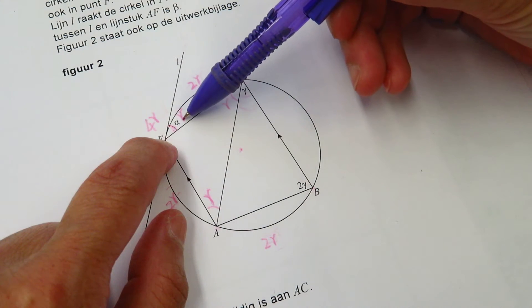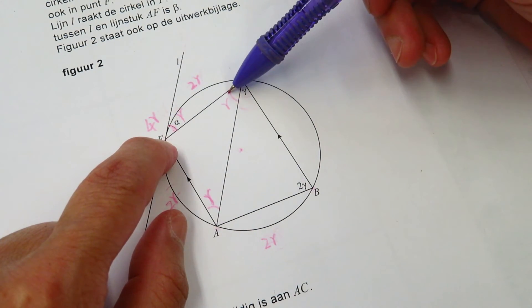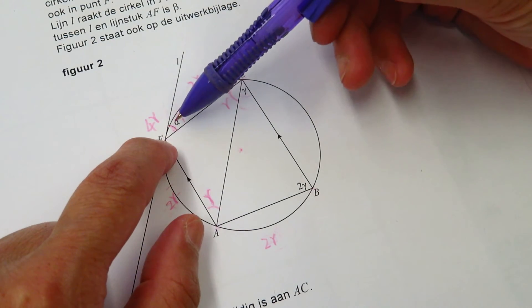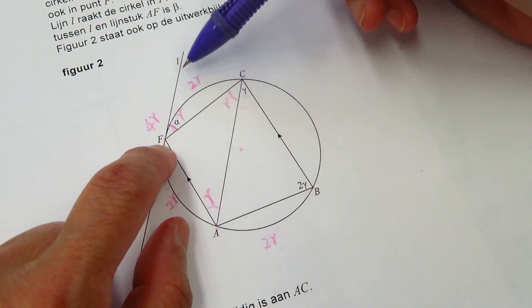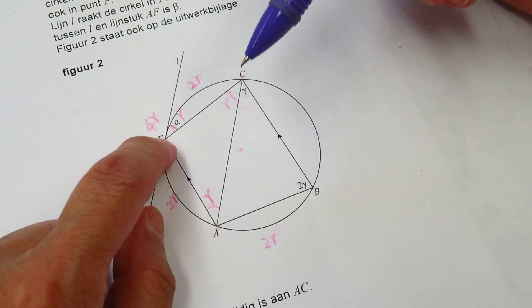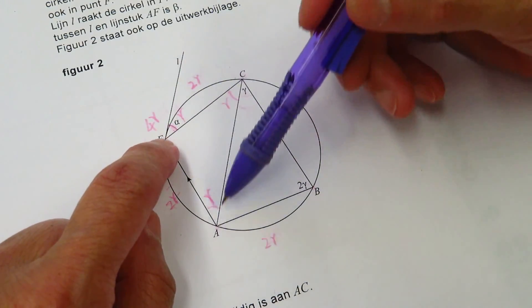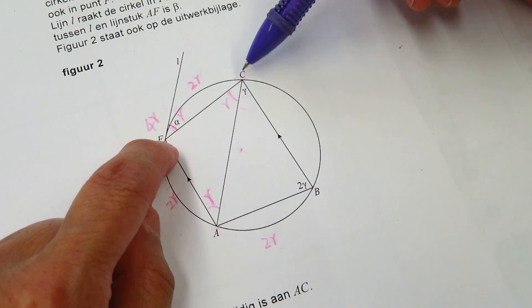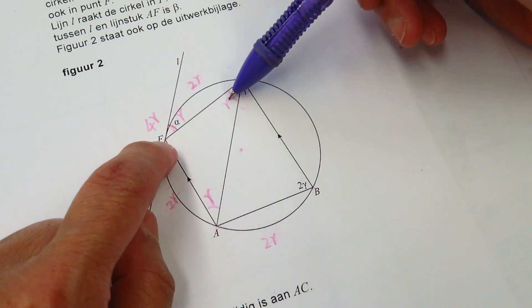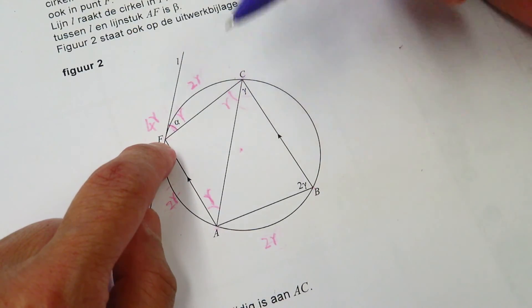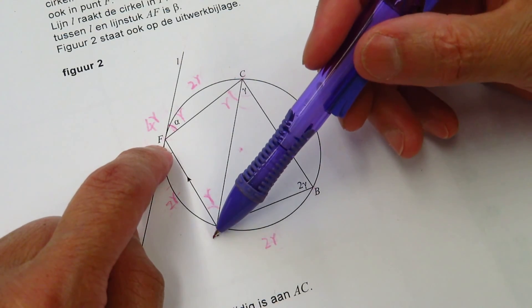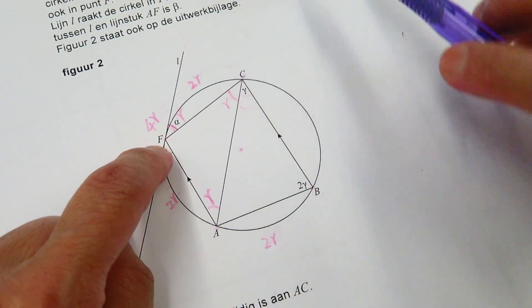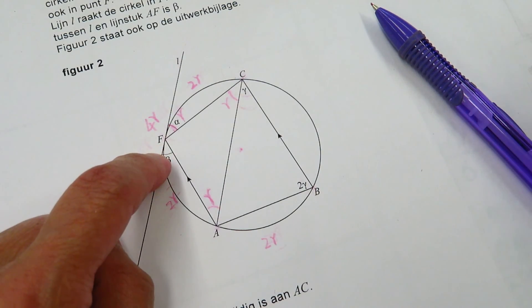Here this angle is gamma. Here this angle is gamma. They are a pair of alternate angles. If the alternate angle is the same, then the two lines are parallel. So now we prove. Because these two angles are the same, these two lines, the line L and the line AC are parallel. Thank you very much.